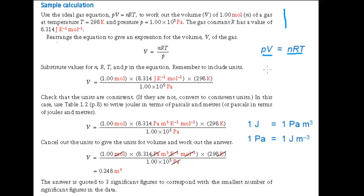The first step is to rearrange the equation to give an expression for V. You can do this by dividing each side of the ideal gas equation by P. These P's cancel out which leaves V equals nRT over P.